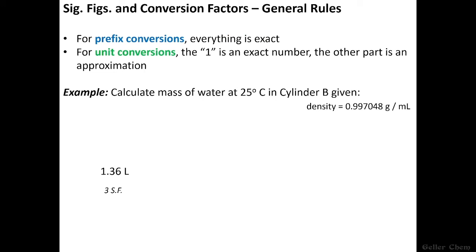So let's say that we want to calculate the mass of water at 25 degrees Celsius in cylinder B, given that this is the density of water at that temperature. Well, we remind ourselves that our volume was estimated as being 1.36 liters, three significant figures. To use this density to get from liters to grams, we first need to change our prefix from liters to milliliters. And so we would use a prefix conversion, where we say that there are 1000 milliliters in one liter.